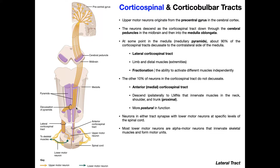Ten percent of these remain on the ipsilateral side of the medulla and continue down the same pyramid, ultimately down into the spinal cord. Above this decussation point we just refer to these as the corticospinal tracts. But once decussation occurs, the 90% that cross over are now termed the lateral corticospinal tract, because as they travel down from the medulla through the spinal cord they have a more lateral positioning in the spinal cord. Whereas the 10% that do not decussate and remain on the ipsilateral side have a more medial position in the spinal cord, so they're referred to as the medial or anterior corticospinal tract.